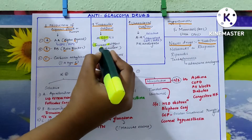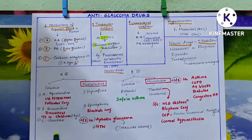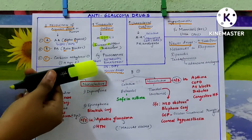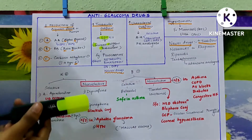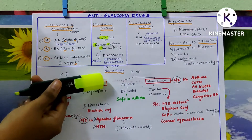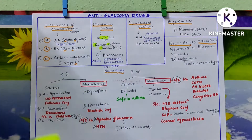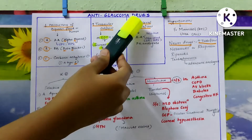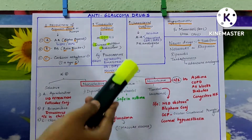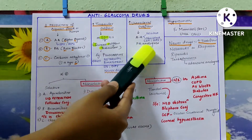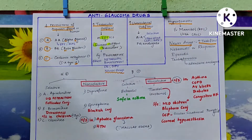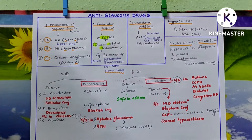The second class is increased trabecular outflow, which involves miotics. In the word 'miotics,' you have 'iot' written in it, representing increased outflow of the trabecular meshwork. The important example here is pilocarpine. For increased uveosc leral outflow, only two classes are involved: alpha agonists and prostaglandin analogues.